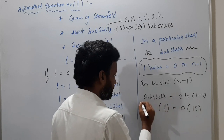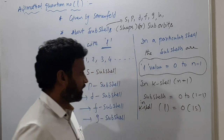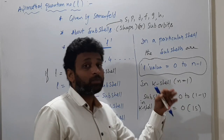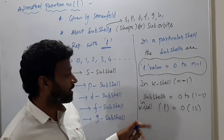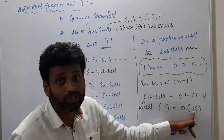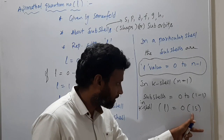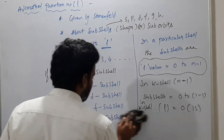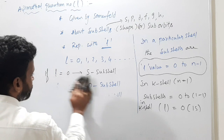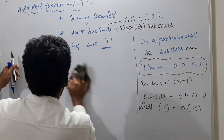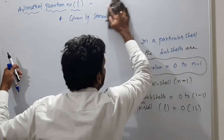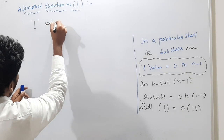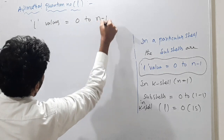Simply remember: l values are from 0 to n−1. For K shell (n=1): l = 0 only → S subshell → called 1s. For L shell (n=2): l = 0 and 1 → S and P → called 2s and 2p. For M shell (n=3): l = 0, 1, 2 → S, P, D → 3s, 3p, 3d. For N shell (n=4): l = 0, 1, 2, 3 → 4s, 4p, 4d, 4f. L values always start from 0 and end at n−1; middle values are also included.